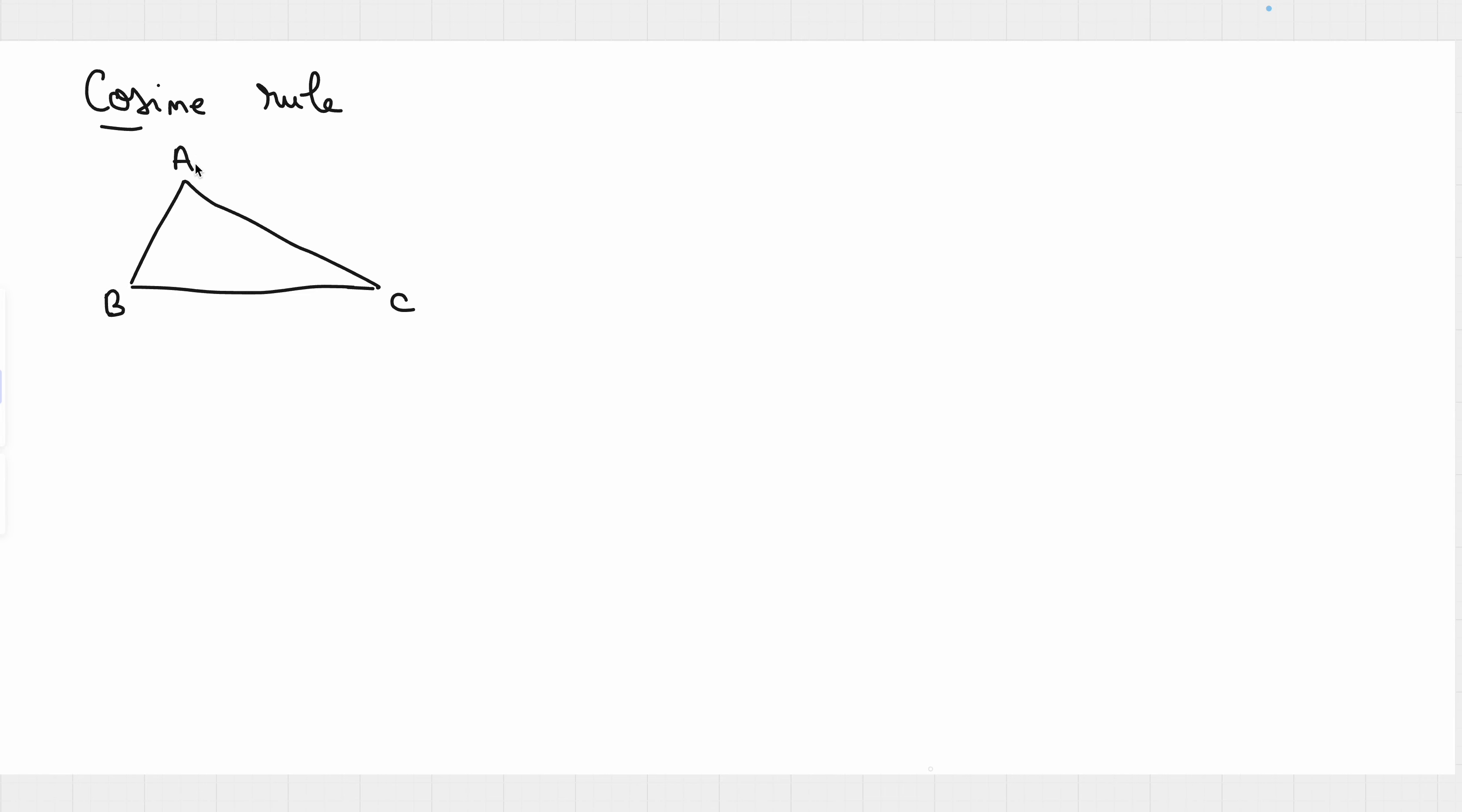So let's look at this triangle. We can denote the side opposing to angle A with small a, the side opposing to angle B with small b, and the side opposing angle C with small c.